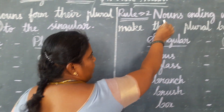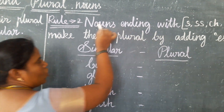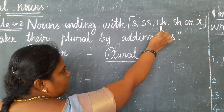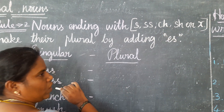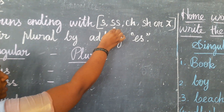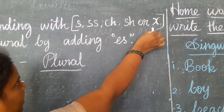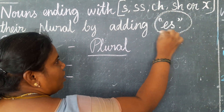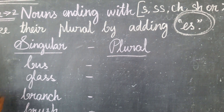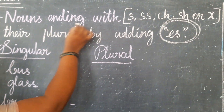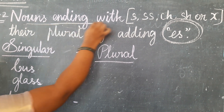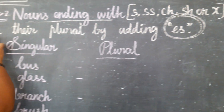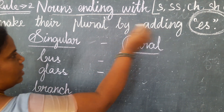Next rule. Nouns ending with S, SS, SH, CH, or X make their plural by adding ES.